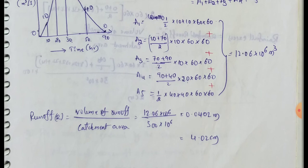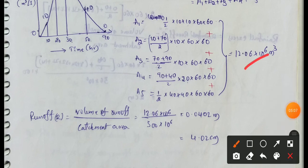Next, runoff formula is volume of runoff by catchment area. If we calculate, R equals 12.06 into 10 power 6 divided by 300 square kilometers.